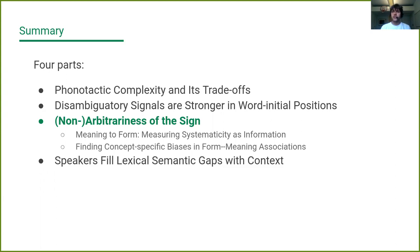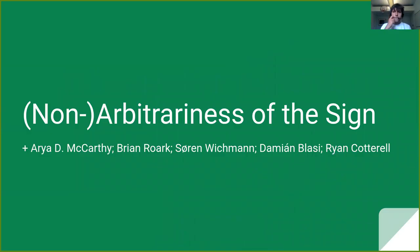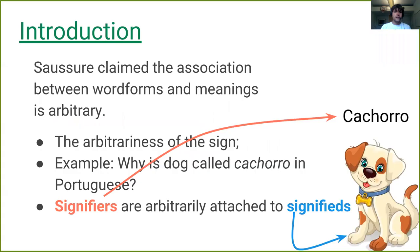This will actually refer to two separate papers on the same topic. This was joint work with Aria, Brian, Soran, Damian, and Ryan. The arbitrariness of the sign is an idea that goes back a bit over 100 years ago.